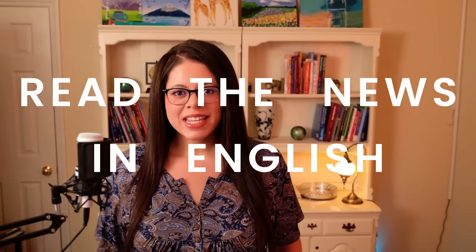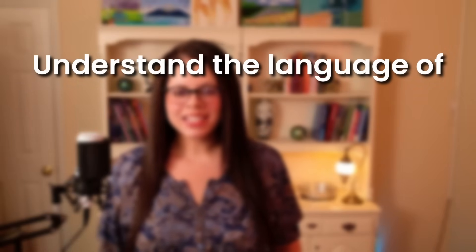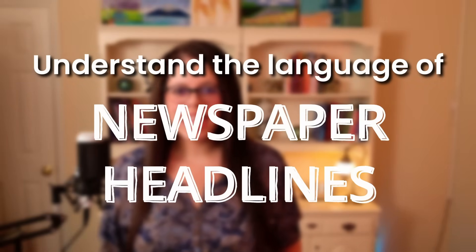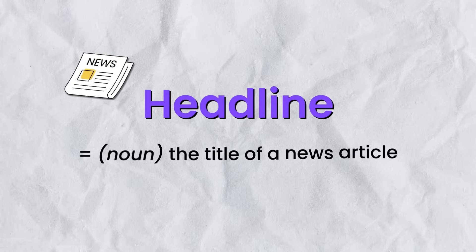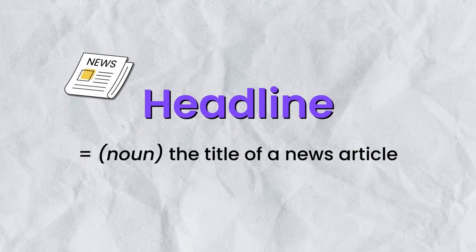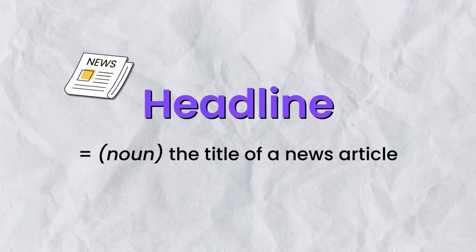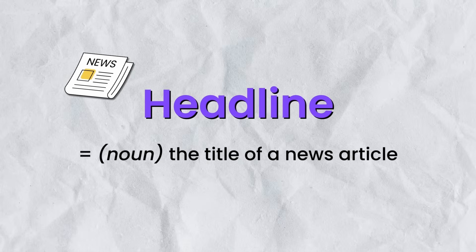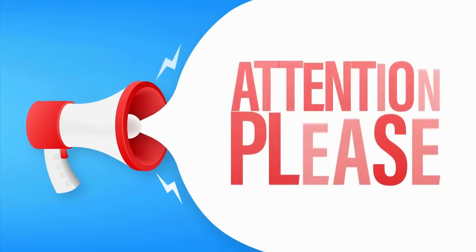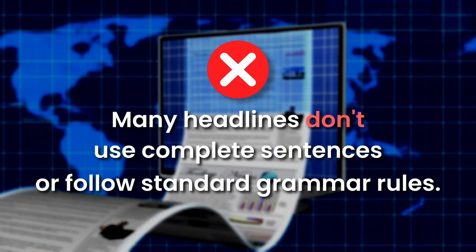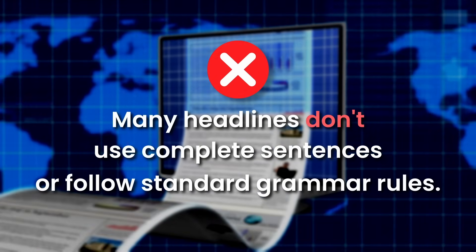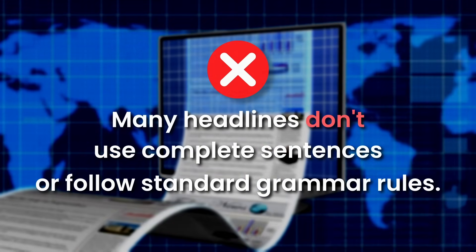If your goal is to read the news in English, then it's very important to understand the language of newspaper headlines. A headline is the title of a news article, and it's often the most difficult part for English learners. This is because journalists use a very distinct style that's designed to be short and attract your attention. This means that many headlines don't use complete sentences or follow standard grammar rules.